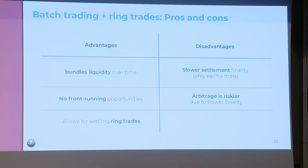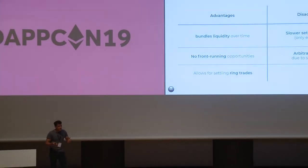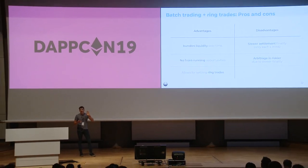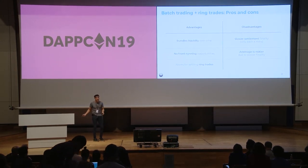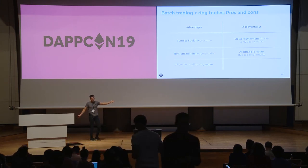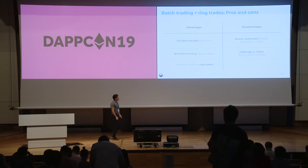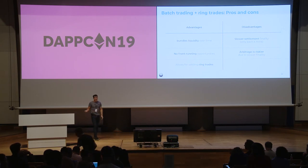Combining batch auctions and ring trades gives the following advantages: liquidity is bundled over time; front-running is much reduced because price-finding happens in a decentralized way without an operator; and since limit orders are not matched at their limit price but at a later-calculated price, the gas auction front-running issue is largely eliminated. Ring trades also provide more liquidity. The downsides are slightly slower finality — just a few minutes — and that arbitrage is always a little riskier.